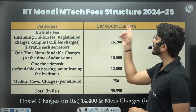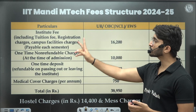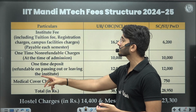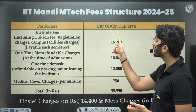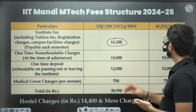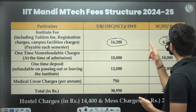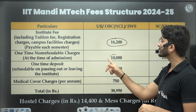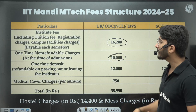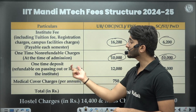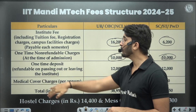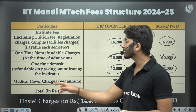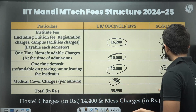If you talk about IIT Mandi MTech fees and structure, then institution fees — which include tuition fees, registration charges, and campus facility charges payable each semester — you need to pay ₹16,200 for general category and ₹6,200 for SC/ST/PwD. One-time non-refundable charges at the time of admission are ₹10,000 for both categories. The one-time deposit of ₹12,000 is refundable when you leave the institution, and medical coverage charges are ₹750 for both categories.